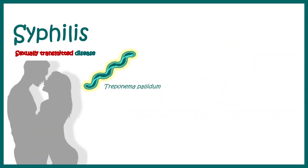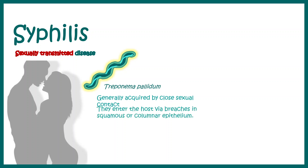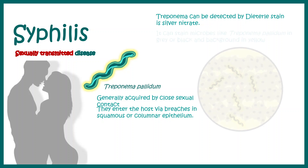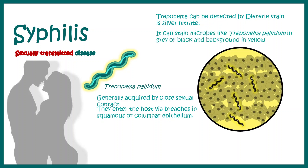Syphilis, which is a sexually transmitted disease, is caused by the spirochete Treponema pallidum. Generally, Treponema pallidum is acquired during intercourse or close sexual contact. These pathogens can bore through the squamous and columnar epithelia and can reach the host's body. Treponema pallidum can be detected with the help of silver staining — in an otherwise yellowish background, they would appear black.